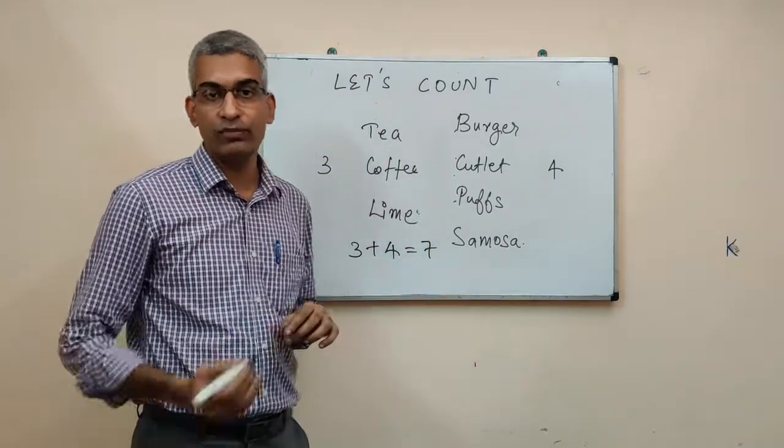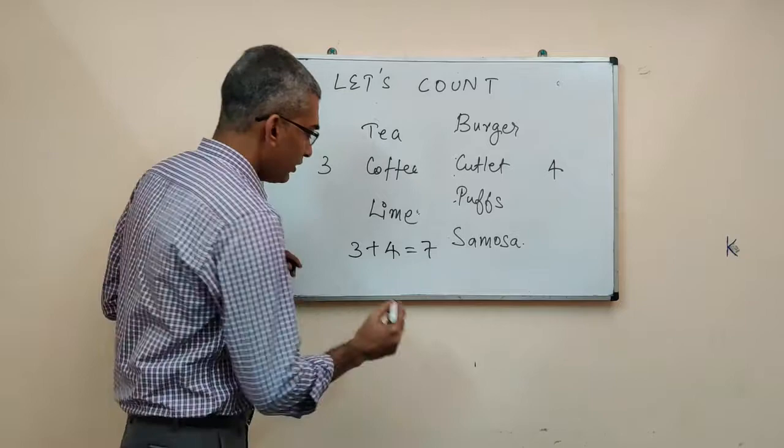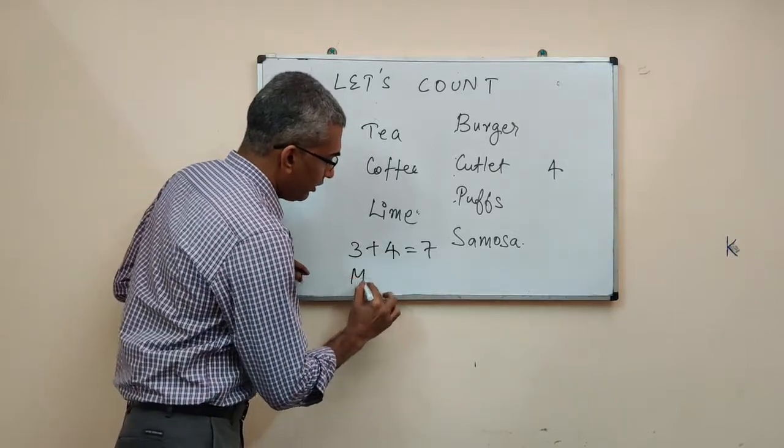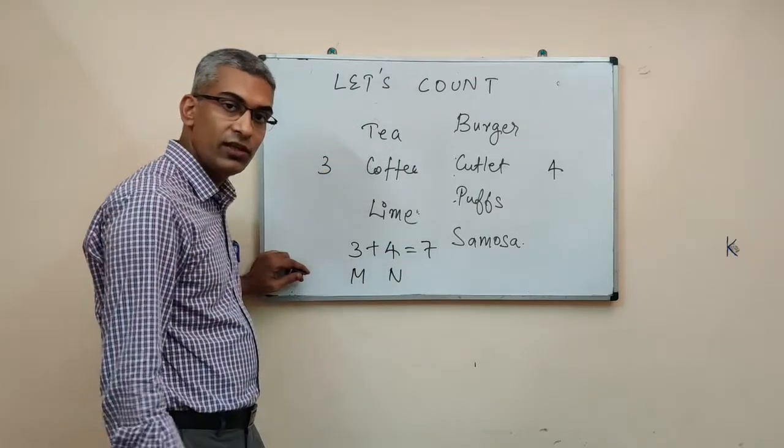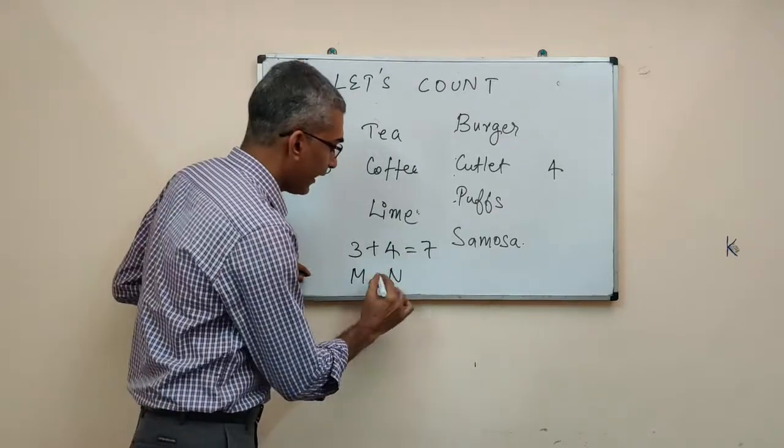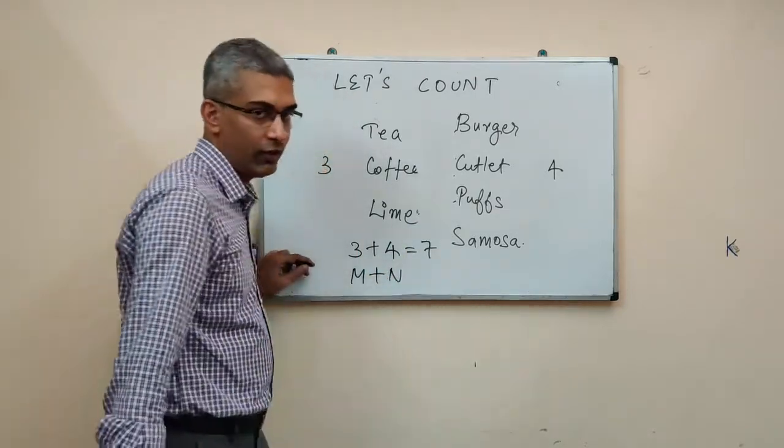This is called addition principle of counting. Stated in another way, if you can do a certain thing in M ways, and if you can do another thing in N ways, then this or that can be done in M plus N ways.